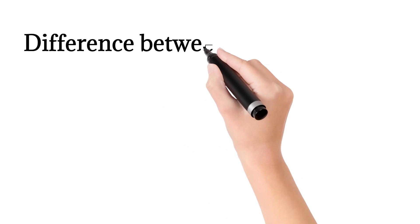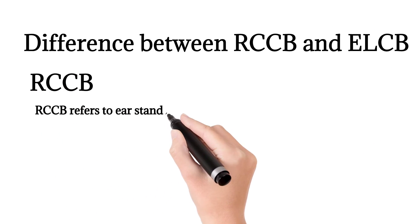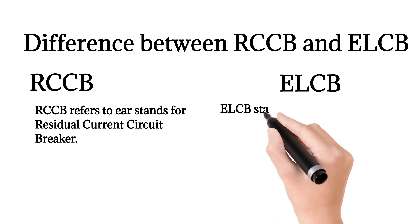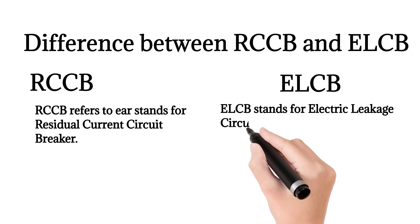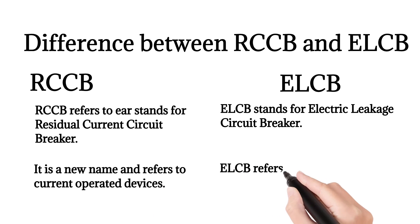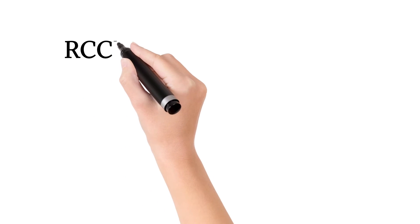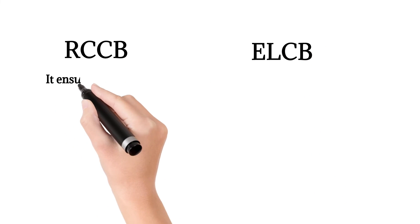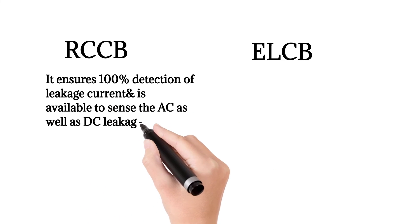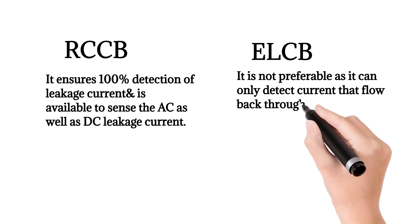Comparing RCCB and ELCB: RCCB stands for Residual Current Circuit Breaker; ELCB stands for Earth Leakage Circuit Breaker. RCCB is a new name and refers to current-operated devices, while ELCB refers to voltage-operated earth leakage devices. RCCB ensures 100% detection of leakage current and is able to sense both AC and DC leakage current. ELCB is not preferable as it can only detect current that flows back through the main earth wire.